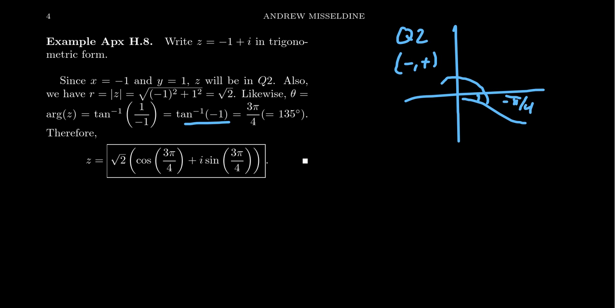We have to add 180 to it or add pi to it, whichever you're using, radians or degrees. We have to add pi to that negative pi over 4. That gives us 3 pi over 4, which is an actual angle in the second quadrant. That's why it's important to identify the quadrant.